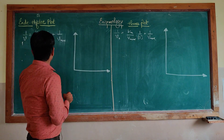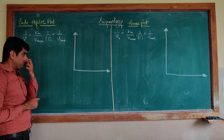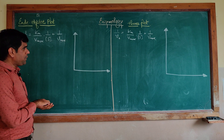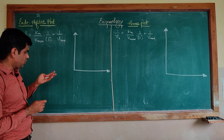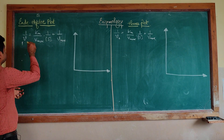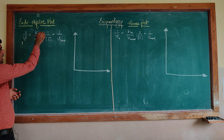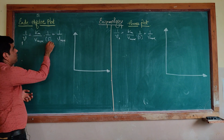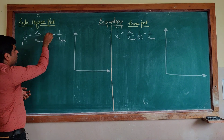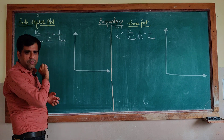Talking about the first plot — the Eadie-Hofstee plot — it basically starts with the Lineweaver-Burk equation. The LB equation is: 1/V0 = (Km/Vmax) × (1/S) + 1/Vmax.